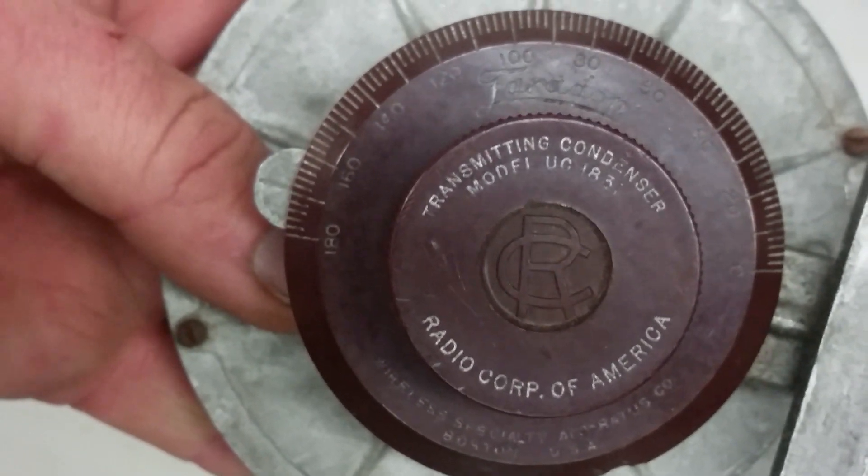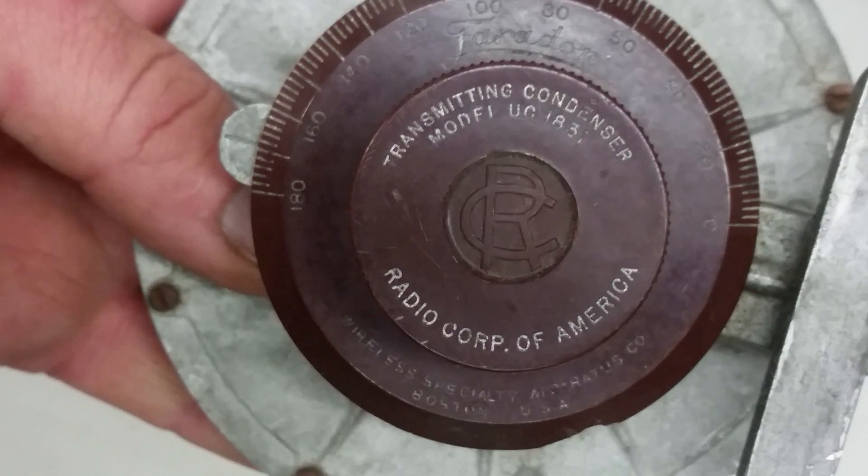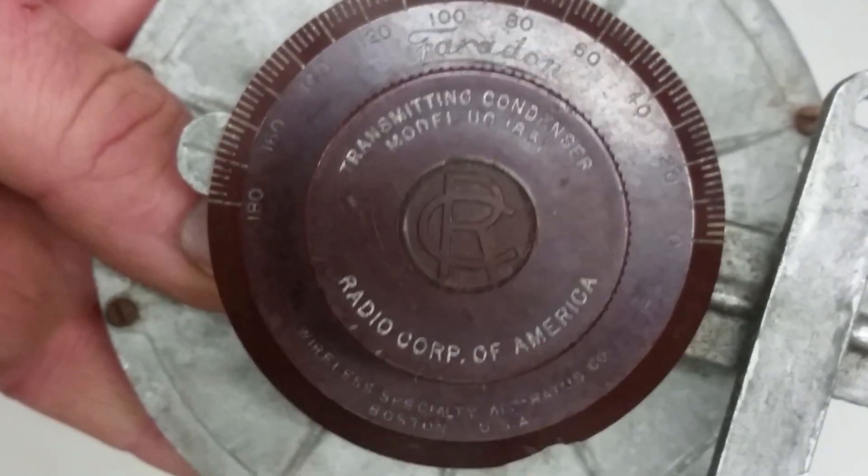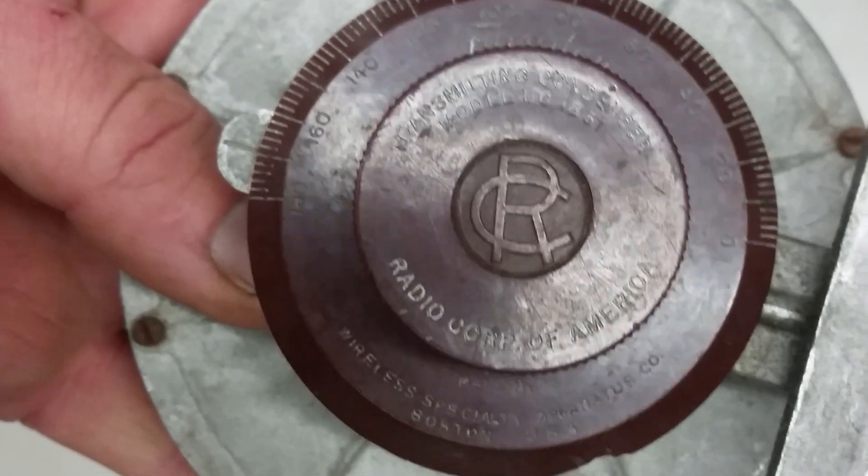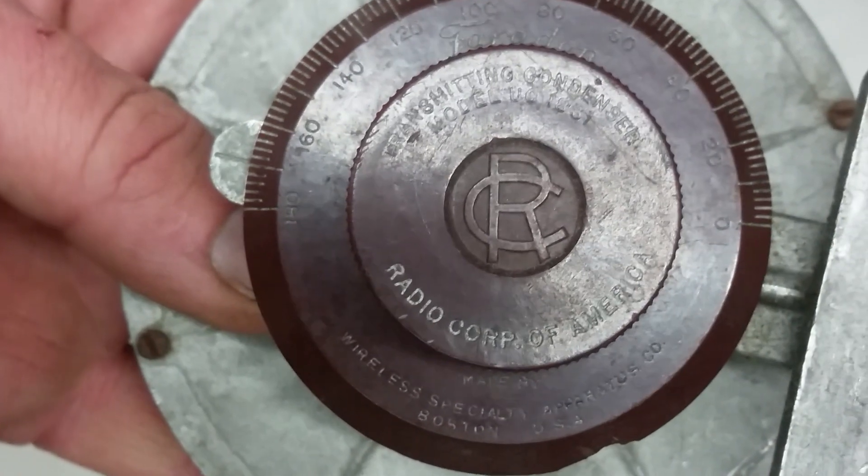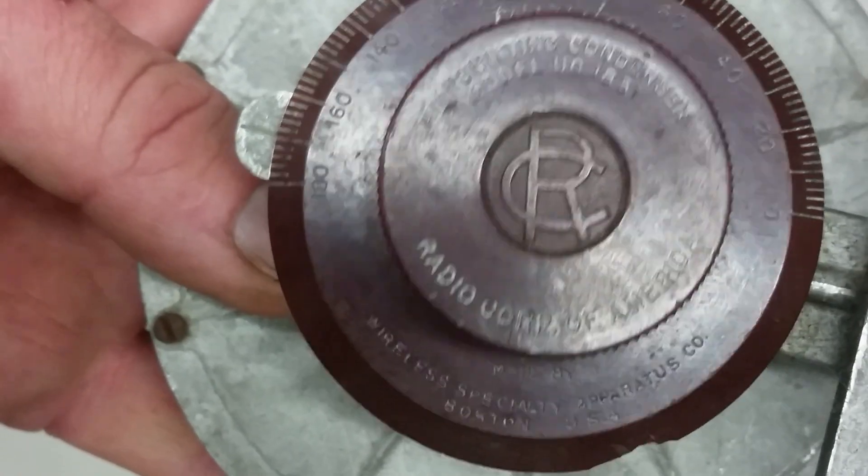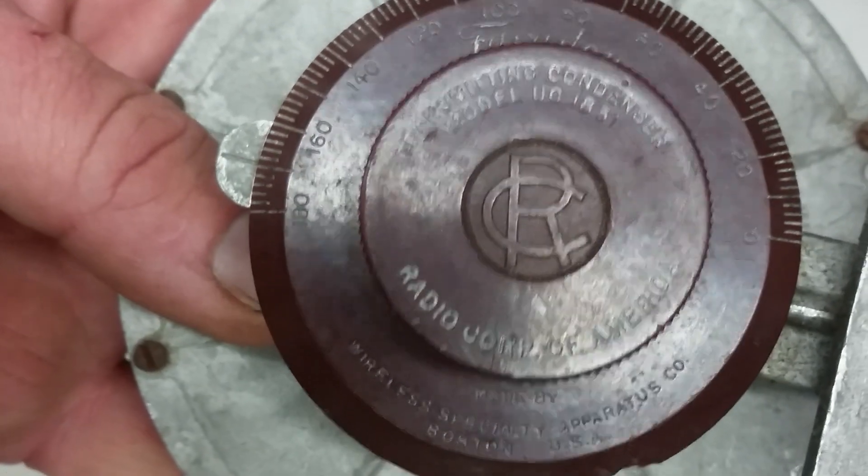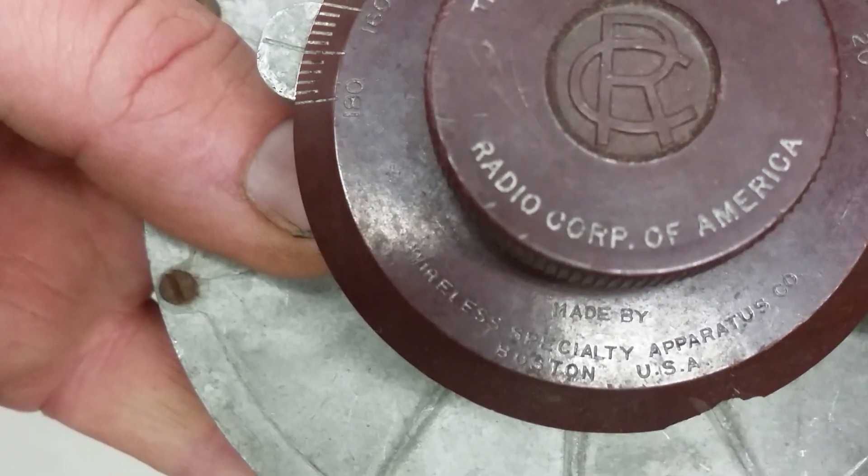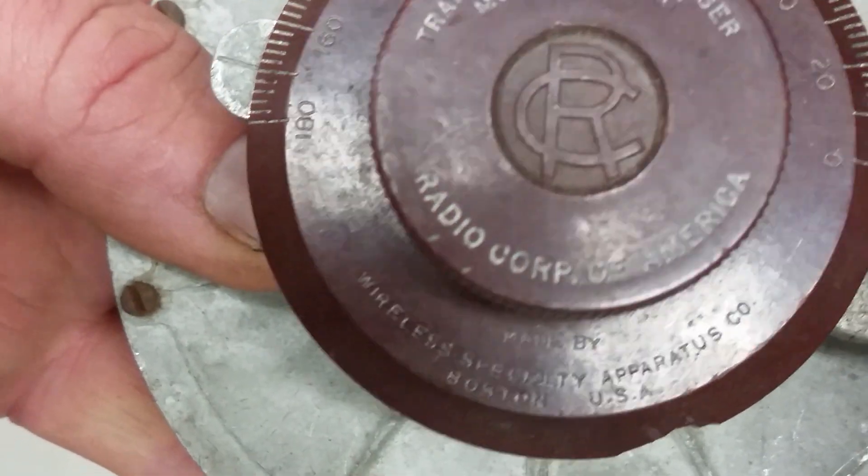See, transmitting condenser, model UC1831, Radio Corporation of America. Maradon, and yes, that logo there, that is the old logo from RCA. They did not use it very long until they switched over to the far more familiar meatball. Sometimes people call that, collectors call that the Radio Corp logo. And down here, we can see made by Wireless Specialty Apparatus Company, Boston, USA.